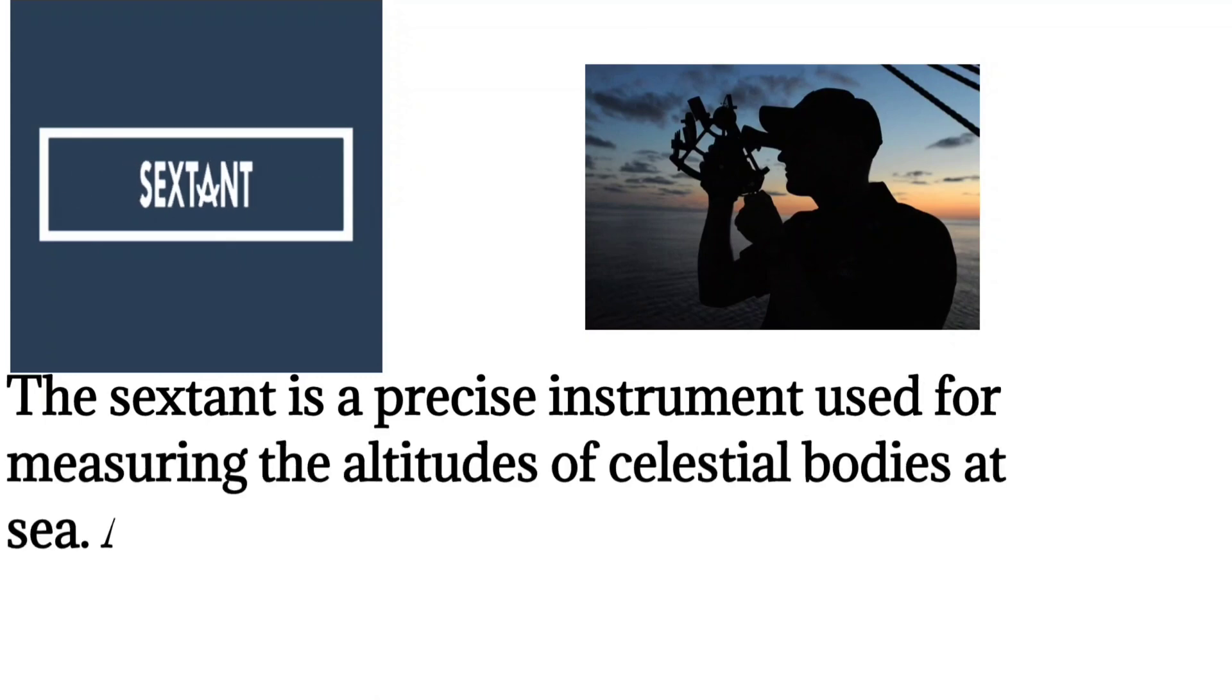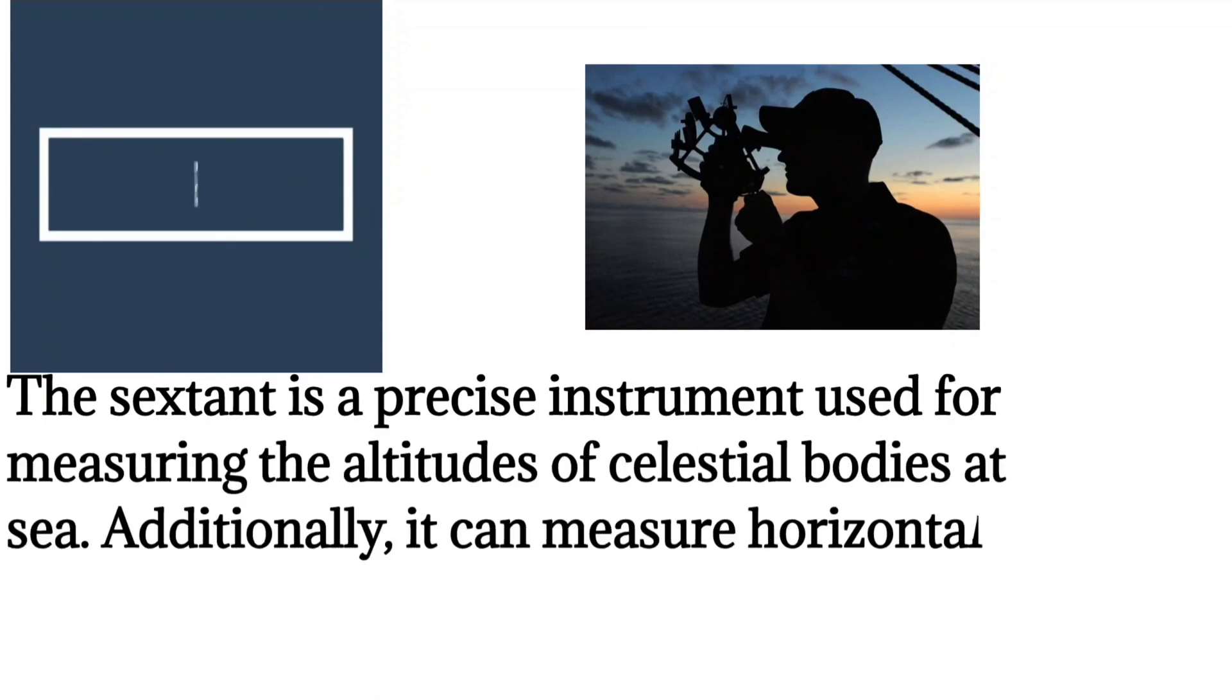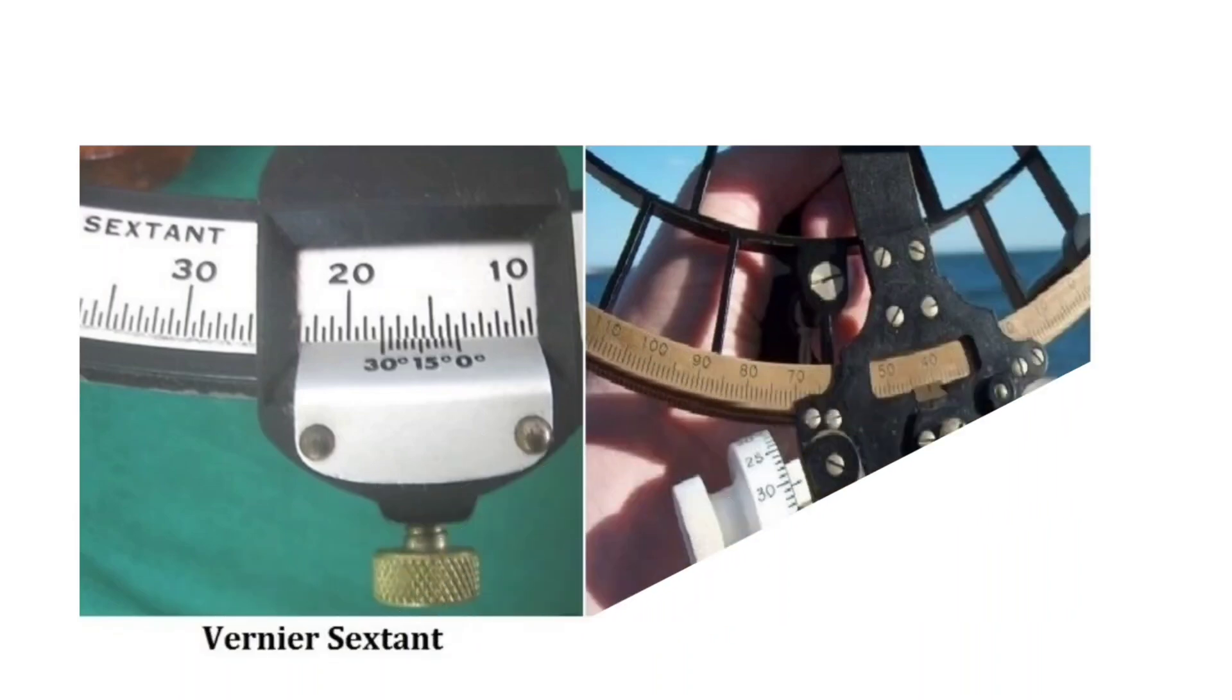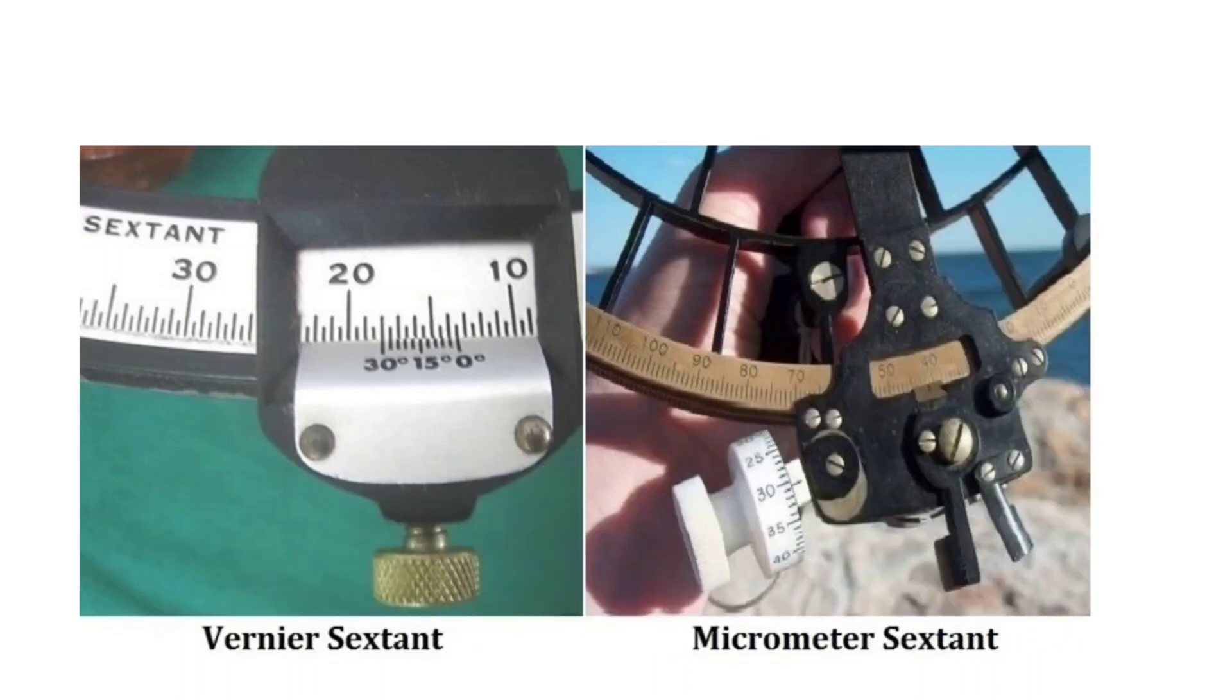Additionally, it can measure horizontal and vertical angles between terrestrial objects. There are primarily two types of sextants, the micrometer sextant and the vernier sextant, with the main distinction being how the arc is graduated.